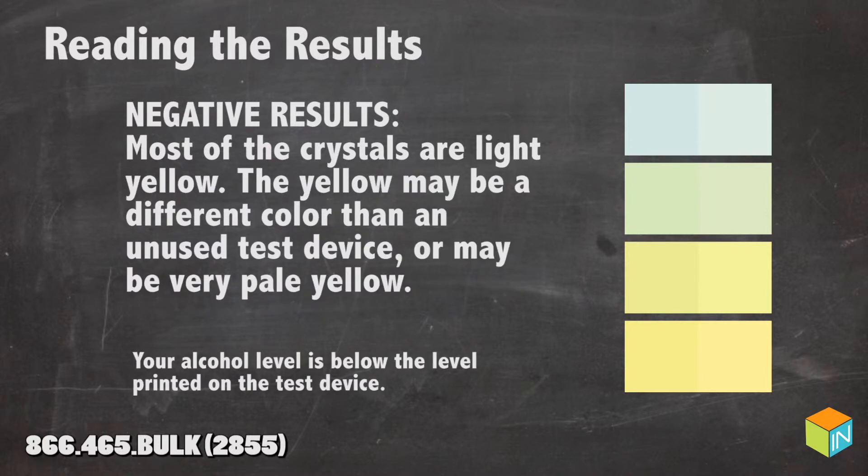Negative results: Most of the crystals are light yellow. The yellow may be a different color than an unused test device or may be very pale yellow. Your alcohol level is below the level printed on the test device.